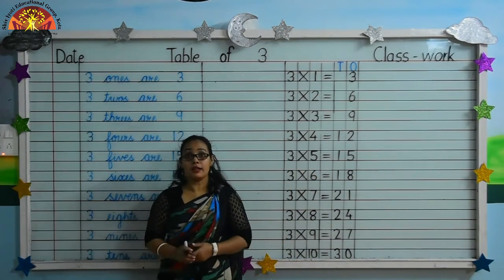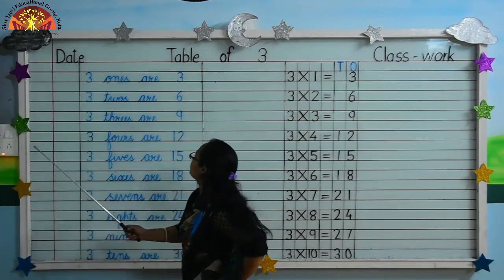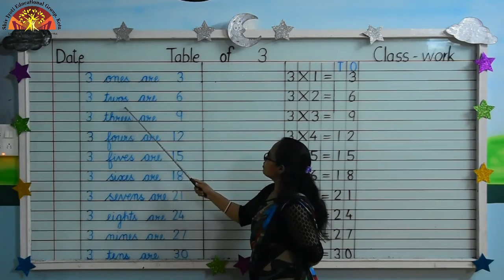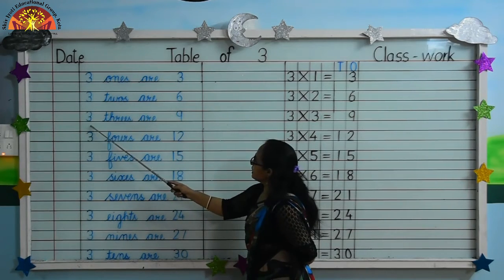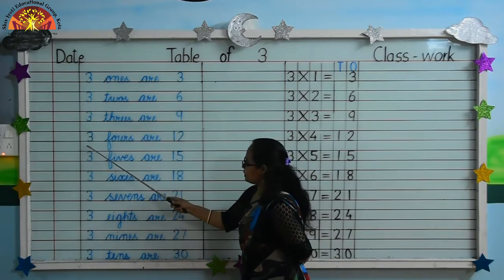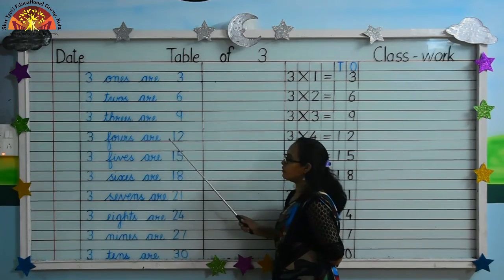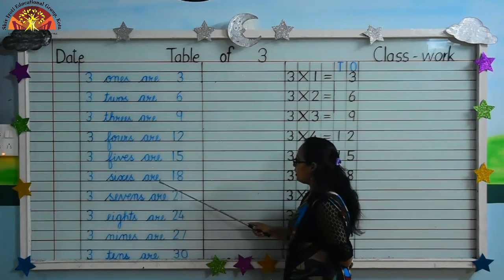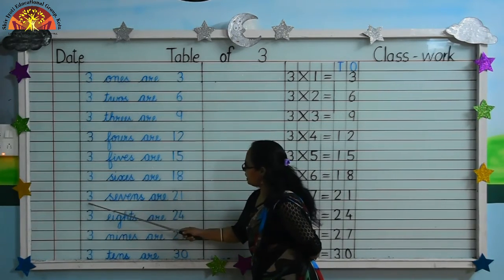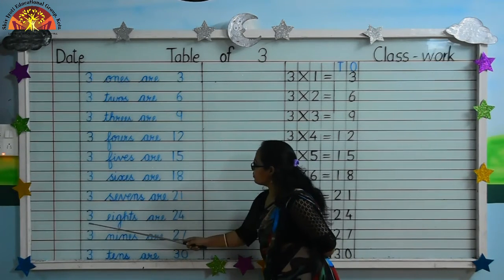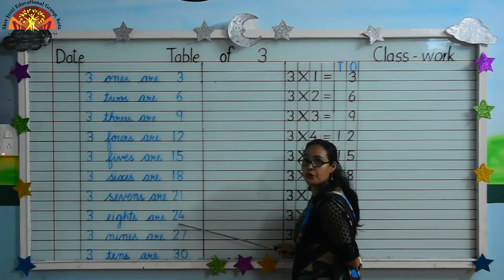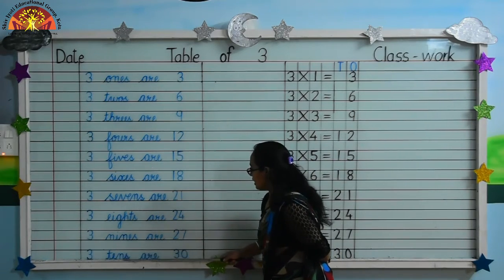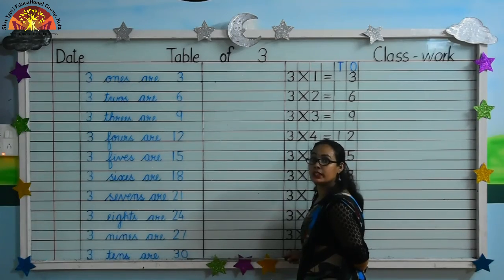Kids, now let's recite once again. Three ones are three. Three twos are six. Three threes are nine. Three fours are twelve. Three fives are fifteen. Three sixes are eighteen. Three sevens are twenty-one. Three eights are twenty-four. Three nines are twenty-seven. Three tens are thirty — three zero — thirty.